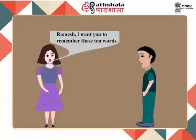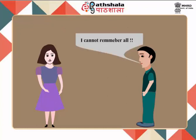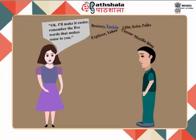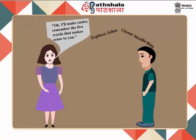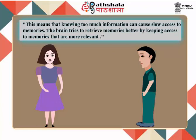Ramesh, I want you to remember these 10 words: Chrome, Lifton, Mozilla, Colon, Explorer, Besatory, Bing, Polica, Yahoo, Taken. Ramesh says he cannot remember all of them. So the task is made easier by remembering only the 5 words that make sense. Now it's easier. This means that knowing too much information can cause slow access to memories. The brain tries to retrieve memories better by keeping access to memories that are more relevant.